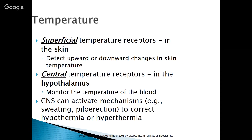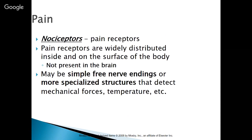We also have a central temperature receptor in the hypothalamus. It monitors the temperature of the blood, and the central nervous system can then activate mechanisms — for example, sweating or piloerection — to correct hypothermia or hyperthermia. If we have hyperthermia, the blood temperature is too hot and we will start to sweat. If we're cold, our hypothalamus signals us to shiver, creating muscle contractions that generate heat.